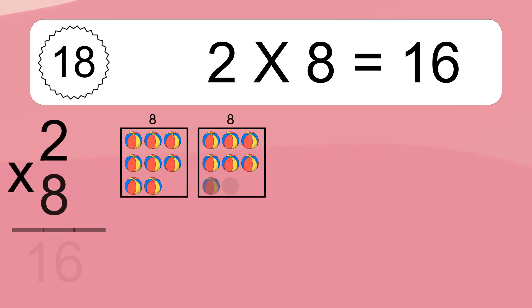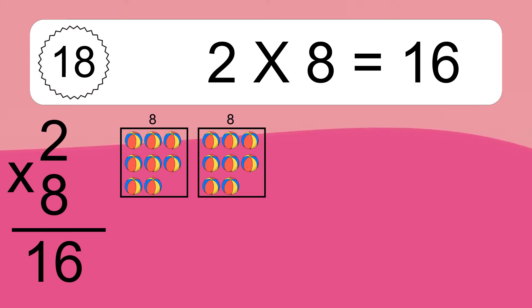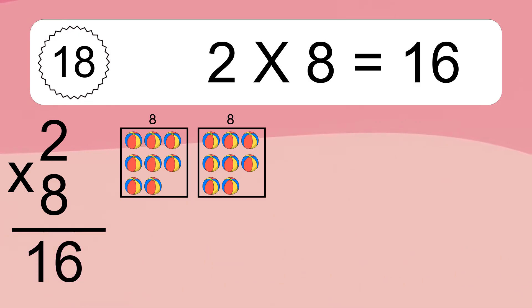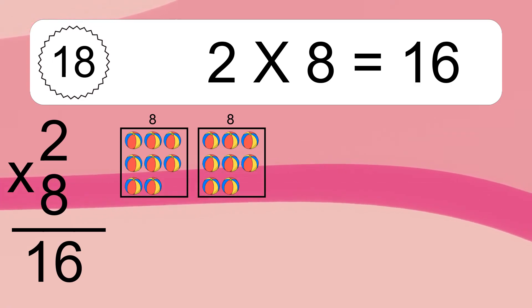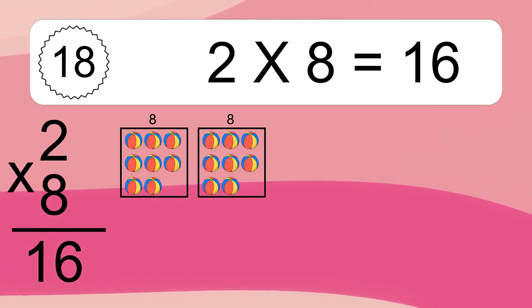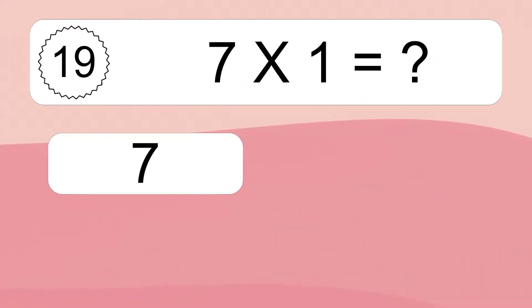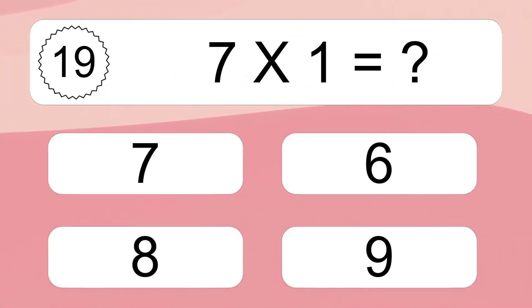2 times 8 equals what? 2 times 8 equals 16. We have 2 boxes, and each box has 8 colorful balls inside. If you count all the balls in all the boxes together, you will have 2 times 8 balls. This equals 16 balls.